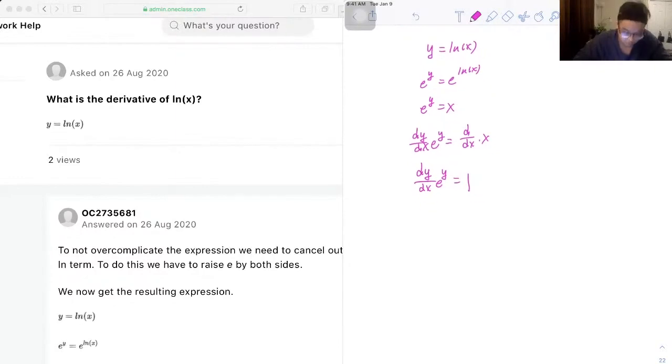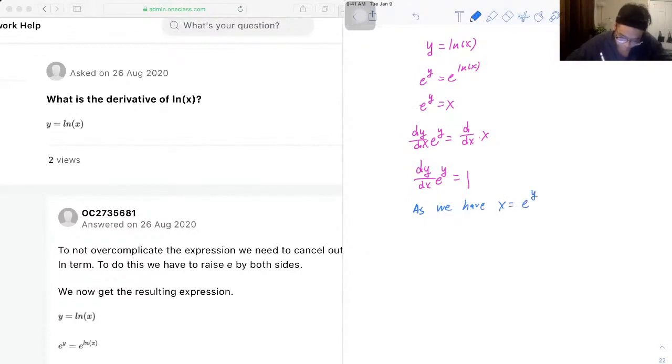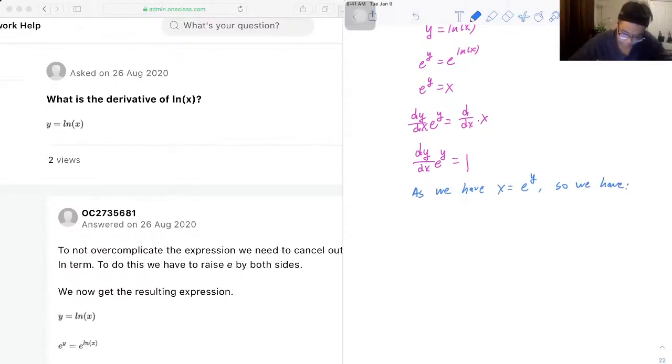So we have x equals e to the y, so we have dy/dx times x equals 1.